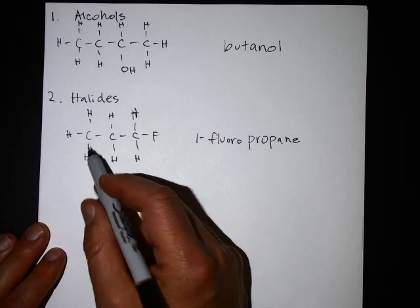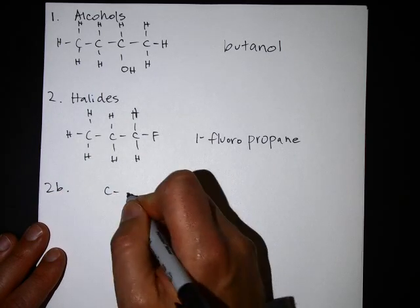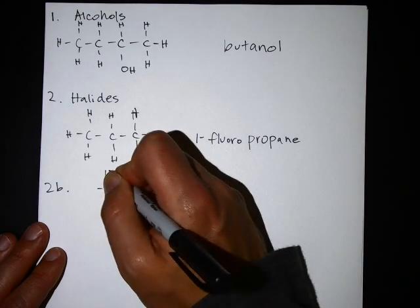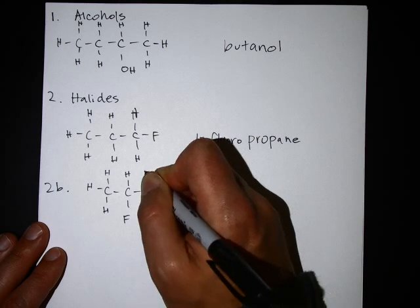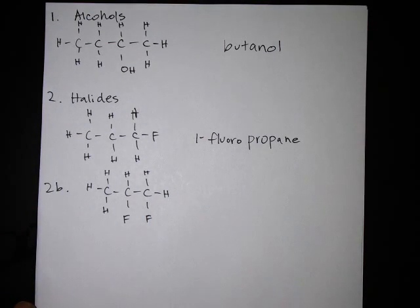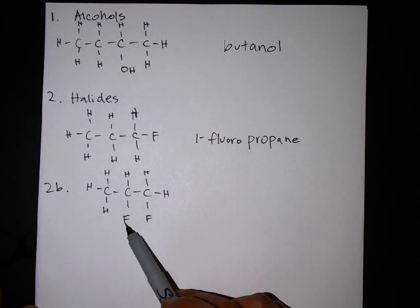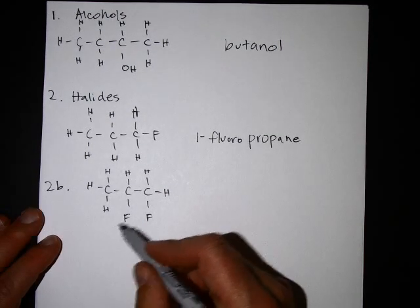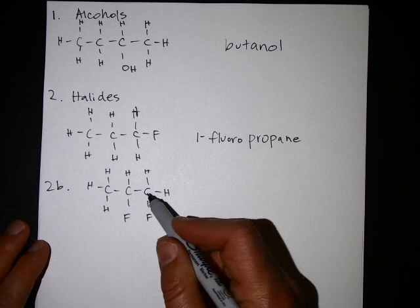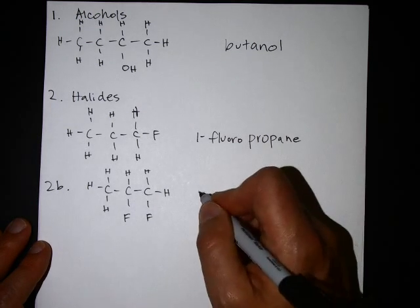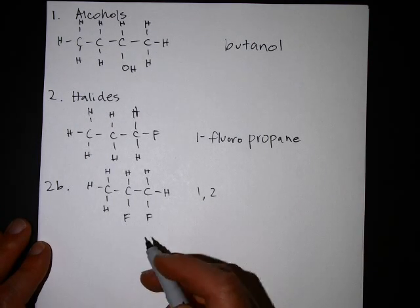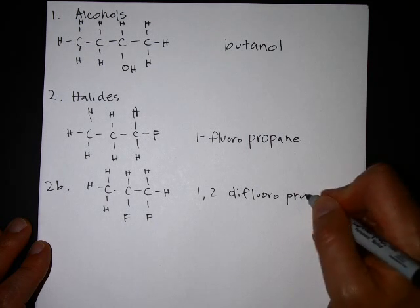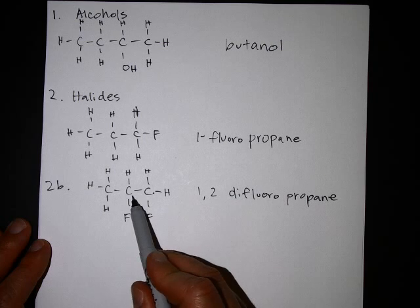Let's do an example where there's more than one, because you will see that on the test. If there's just one chlorine and one fluorine, you would say 2-chloro-1-fluoropropane. Now let's say there are two fluorines — it doesn't matter which direction they point, only what carbon they're on. This one is on the first carbon, this one is on the second carbon, so we say one and two for the positions. Since there are two of them, you use the di- prefix: 1,2-difluoropropane. One, two — just numbering the carbons.